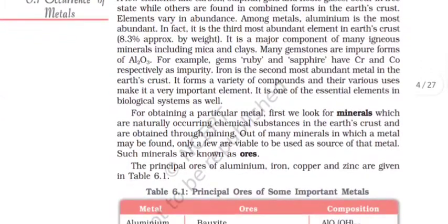It is major component of many igneous materials, minerals, including mica and clays. Many gemstones are impure forms of Al2O3. For example, gems, Ruby and Sapphire have chromium and cobalt, respectively, as impurity.